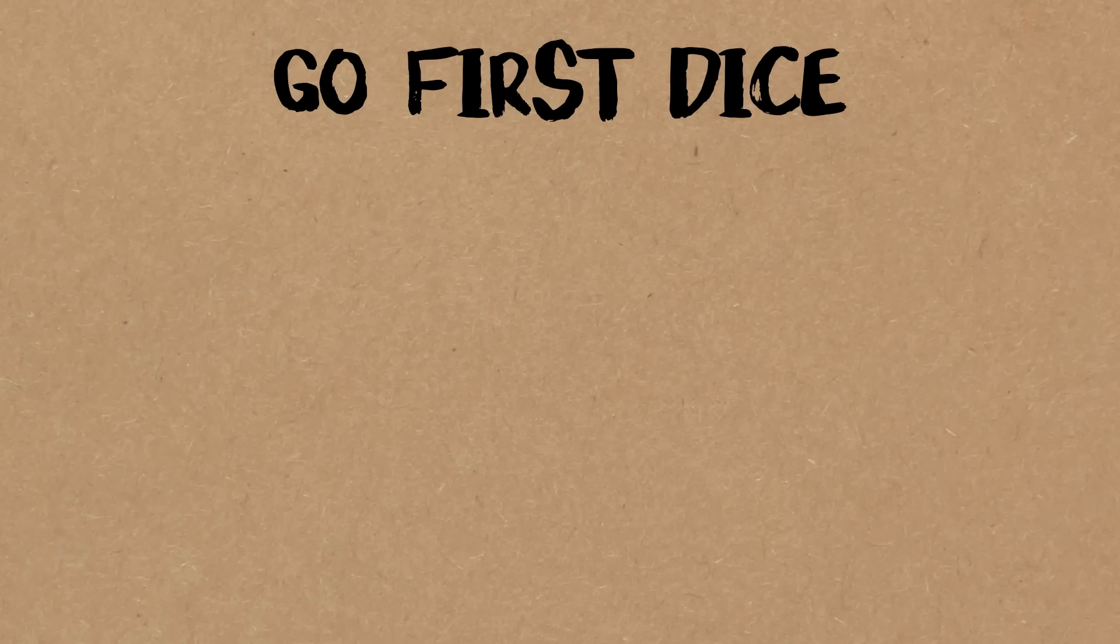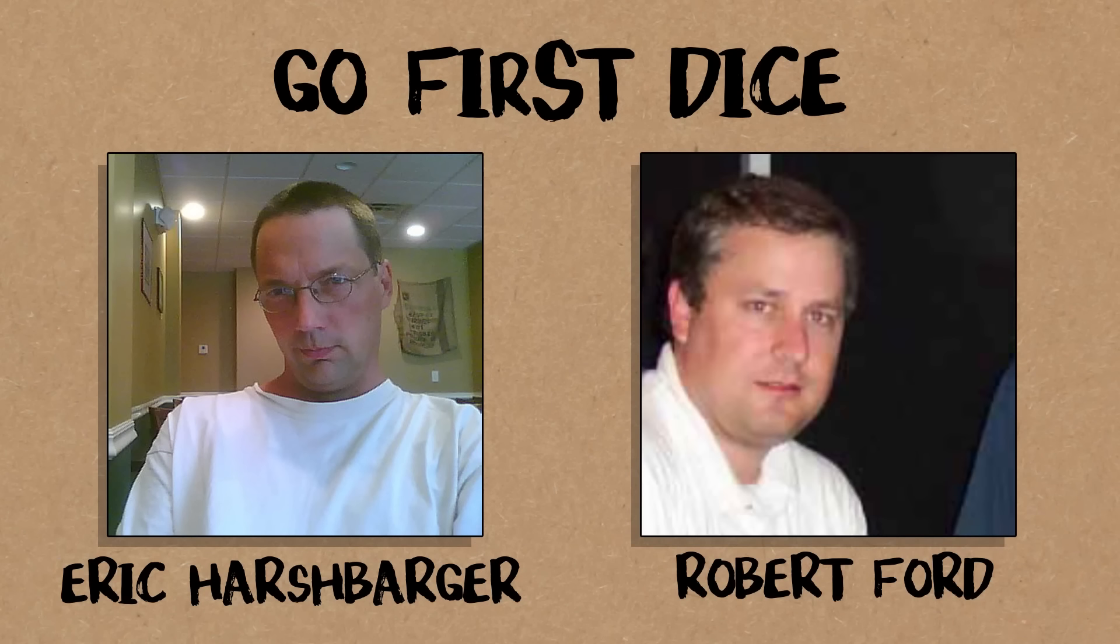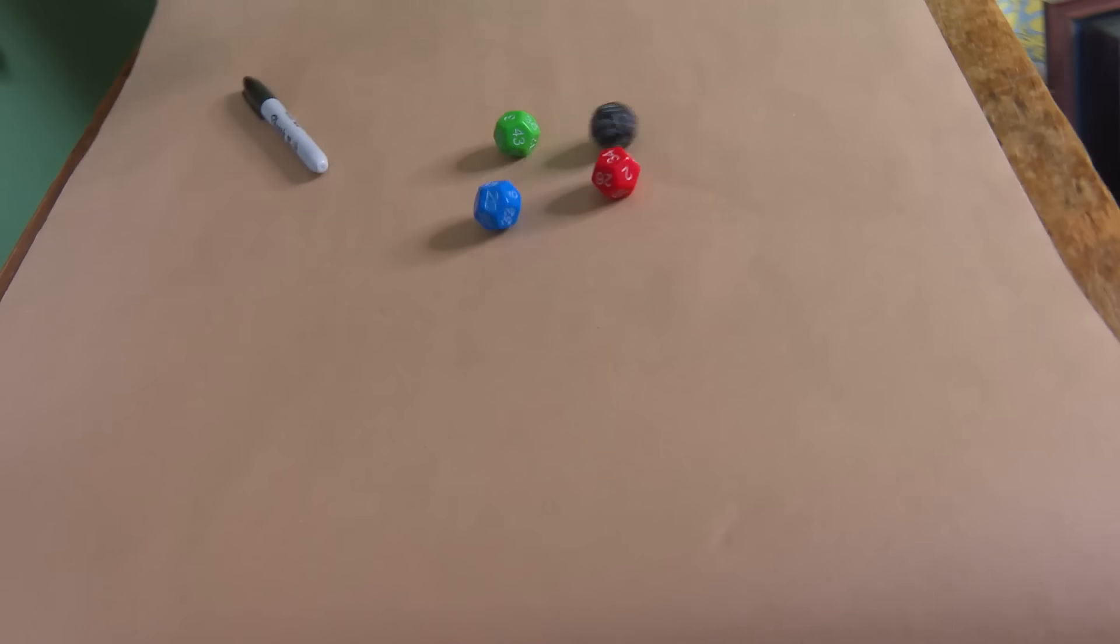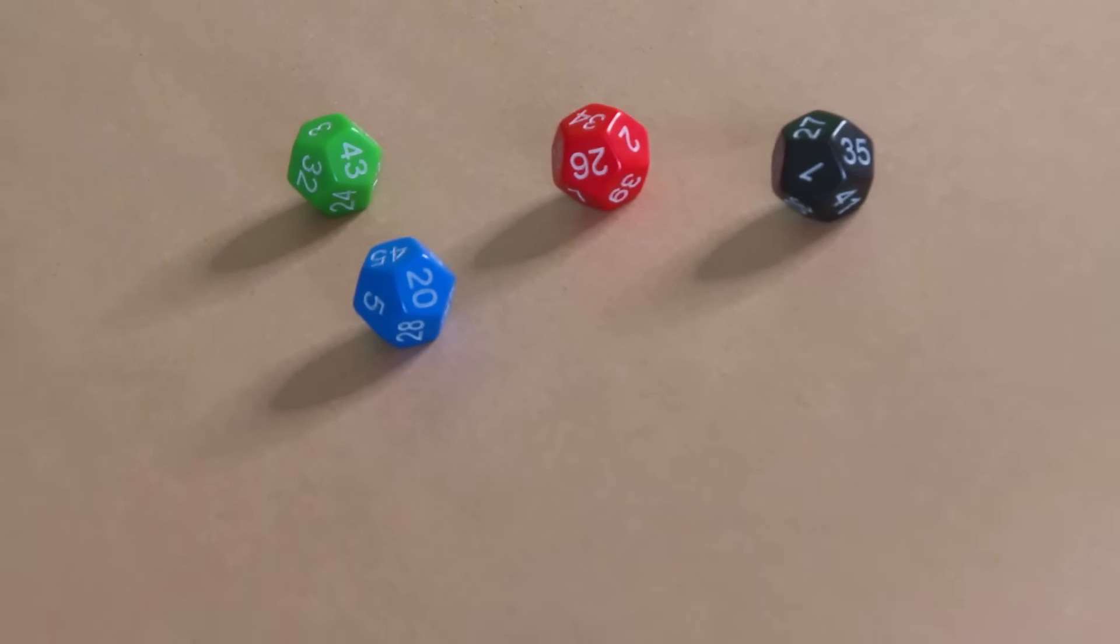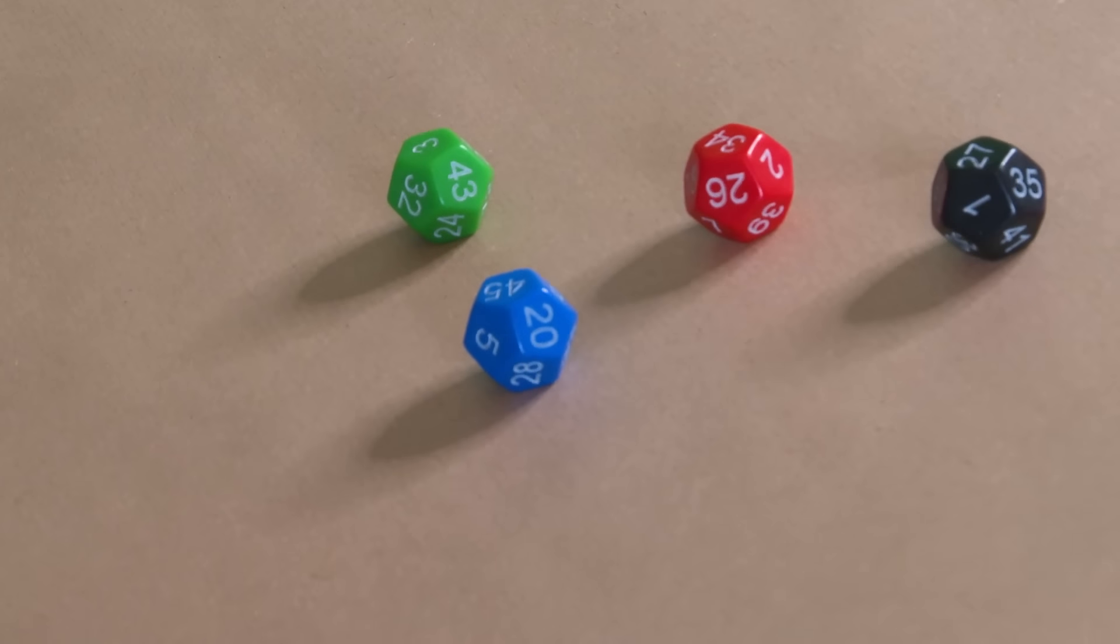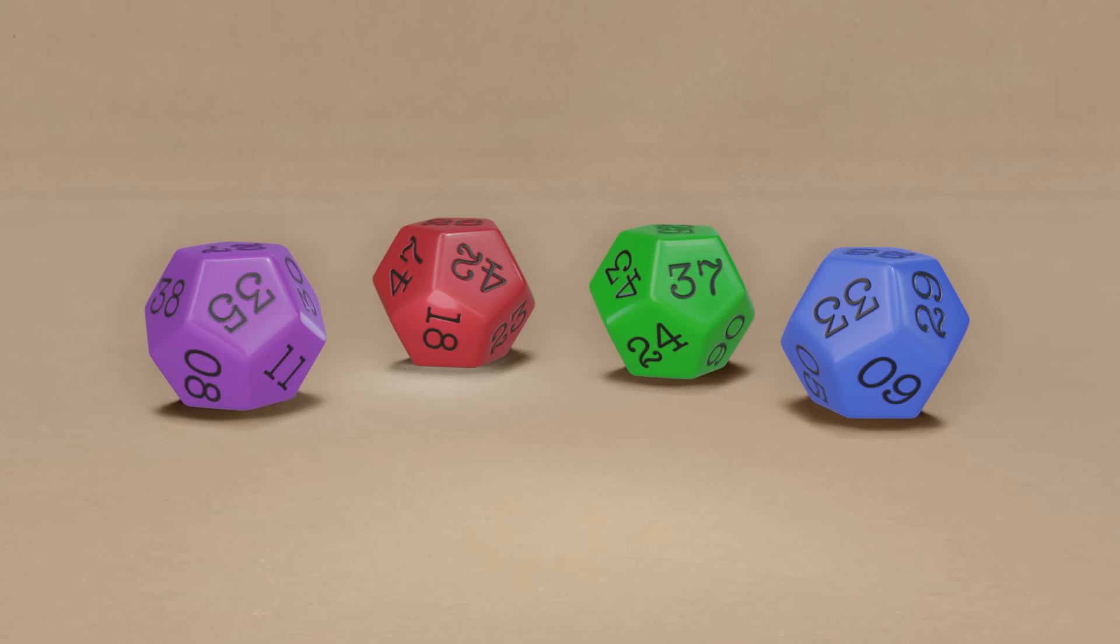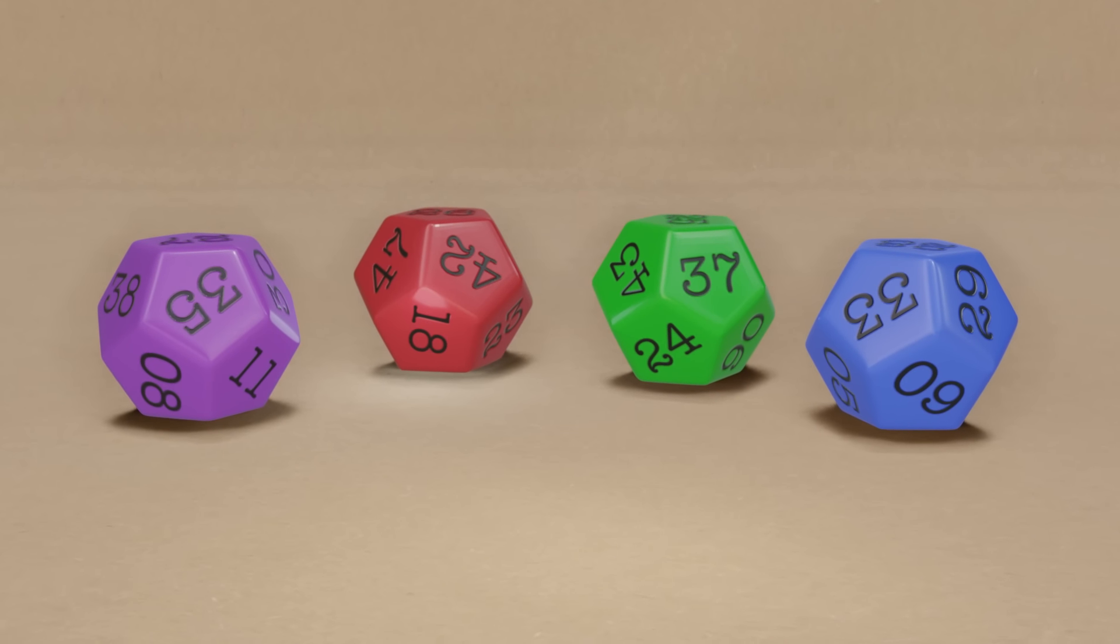Is there a set of four dice, so each player can have one, roll them together. There are no draws and they're all equally likely to be first, second, third and fourth. That's the question. Well that does exist. They're called Go First Dice. They were invented by Eric Harshbarger and Robert Ford about 10 years ago.